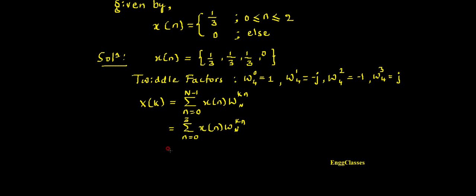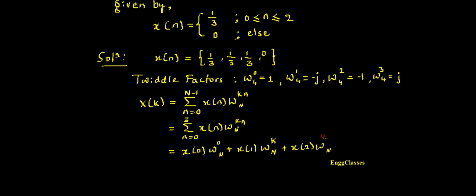Next I just have to expand this summation by varying n from 0 to 3. Putting n=0: x(0)·W4^(k·0). Putting n=1: x(1)·W4^k. Putting n=2: x(2)·W4^(2k). Putting n=3: x(3)·W4^(3k).